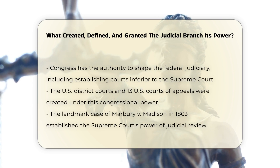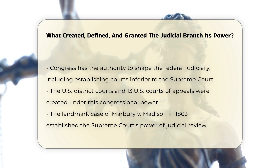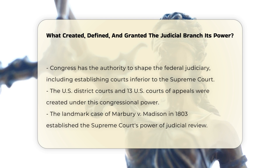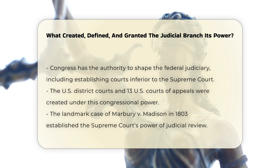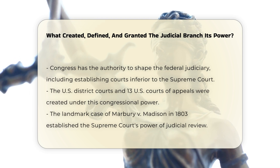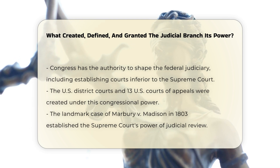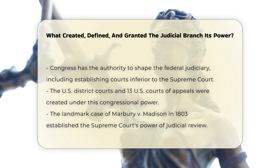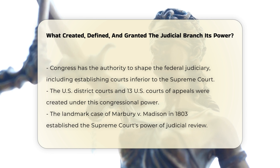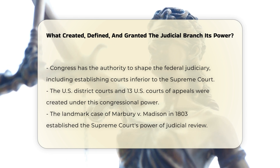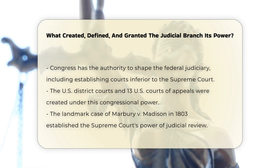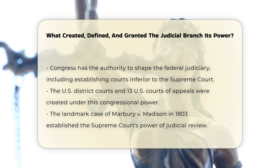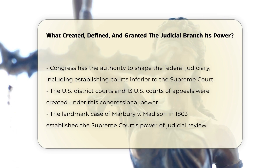Article 3 of the Constitution grants Congress significant authority to determine the shape and structure of the federal judiciary. This includes the power to establish courts inferior to the Supreme Court, such as the United States District Courts and the 13 United States Courts of Appeals.